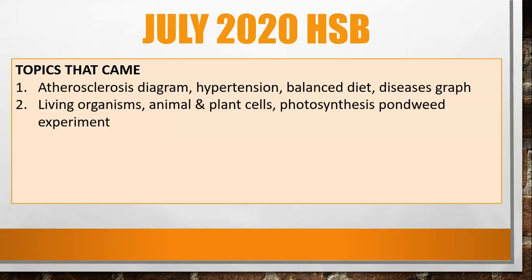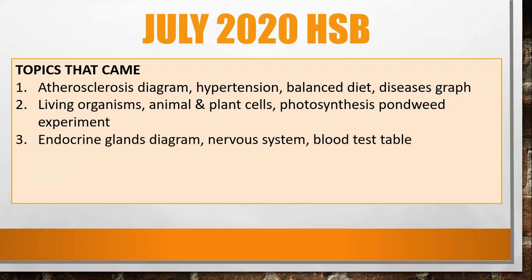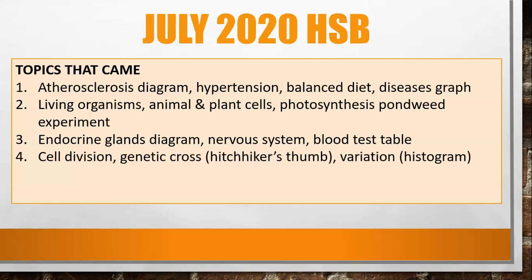The second question was on characteristics of living organisms, where you had to compare animal and plant cells. There was also an investigation on photosynthesis — the hornweed experiment. The third question was about the endocrine glands, with a diagram highlighting the endocrine glands which you had to label, and you had to compare the endocrine system with the nervous system.